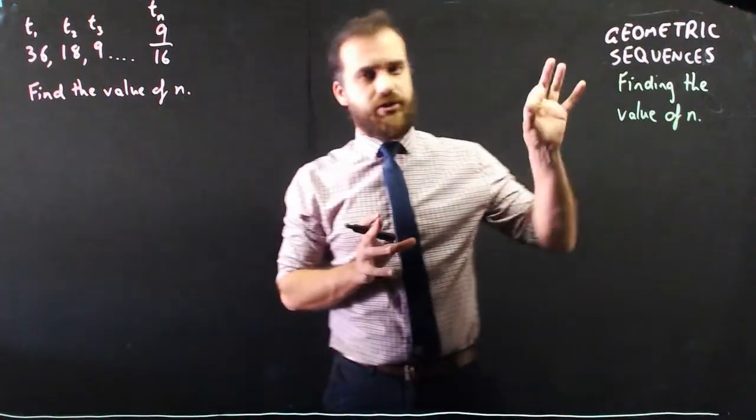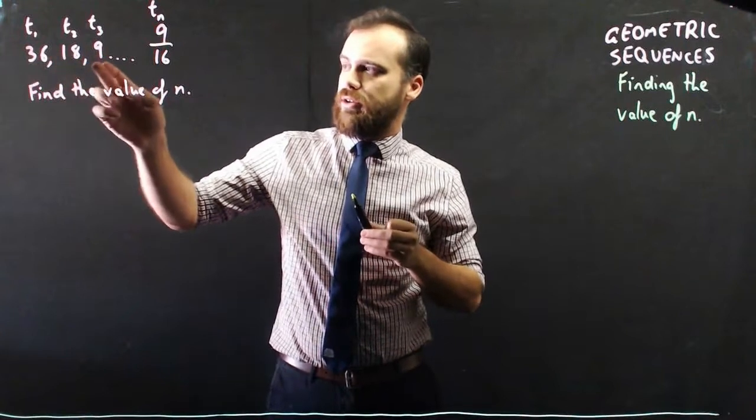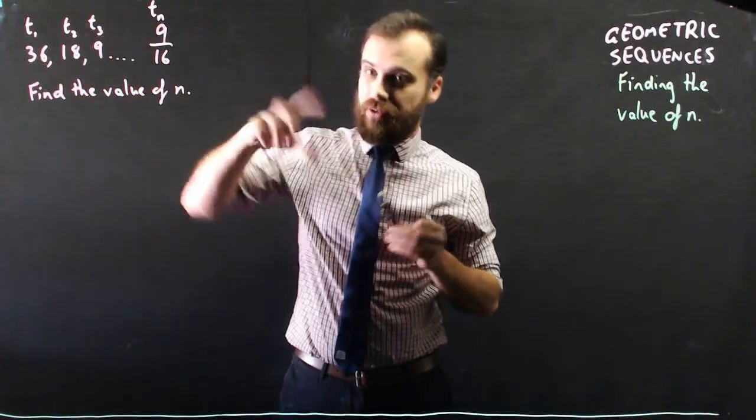Alright, so an interesting sort of question here, geometric sequences. We've got a geometric sequence here, 36, 18, 9, it's being multiplied by one half every time.